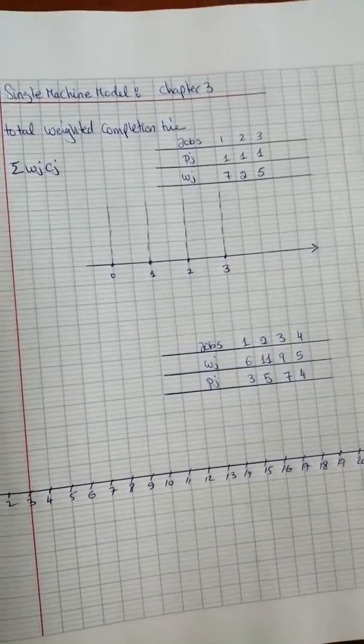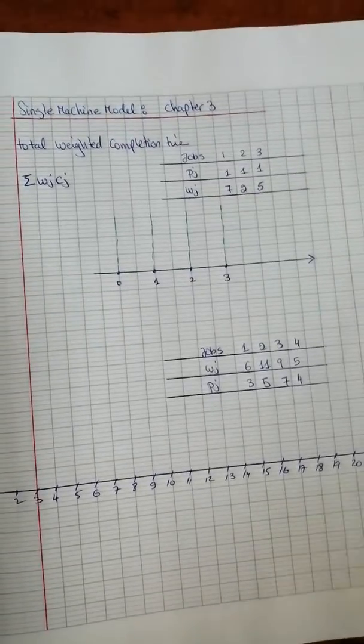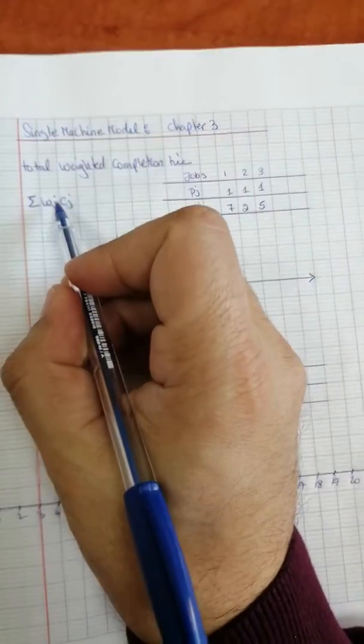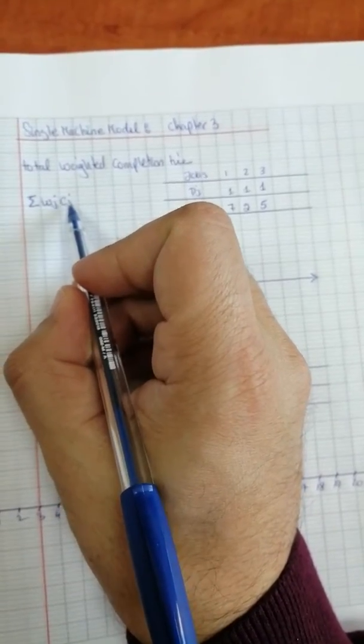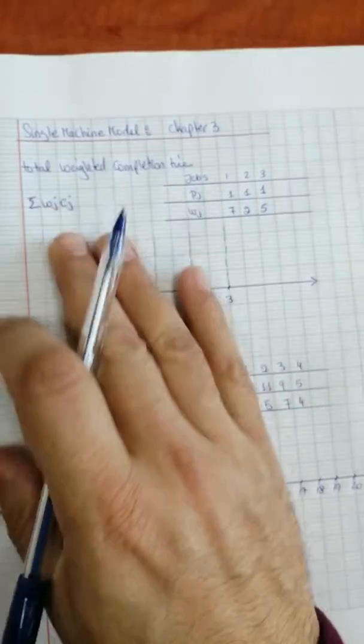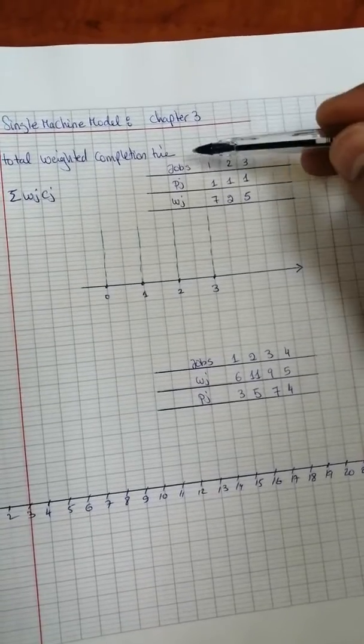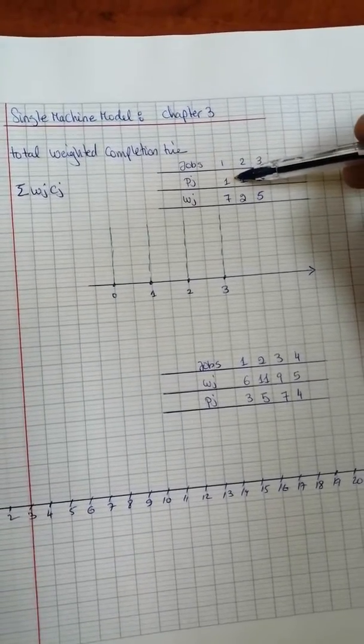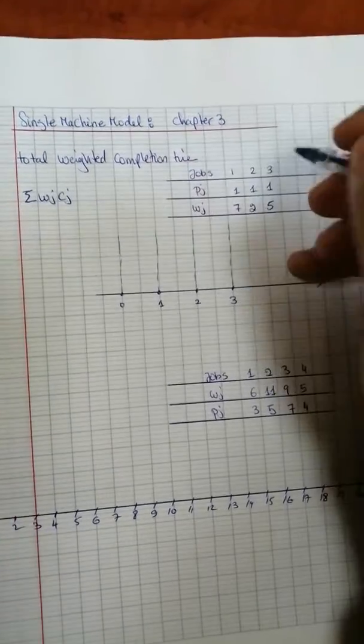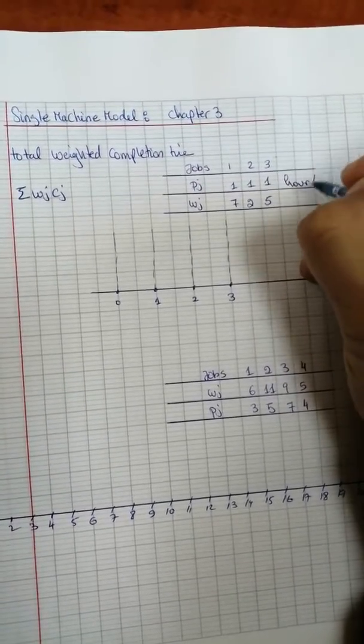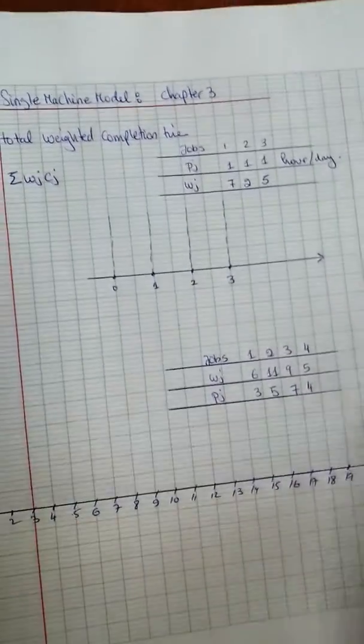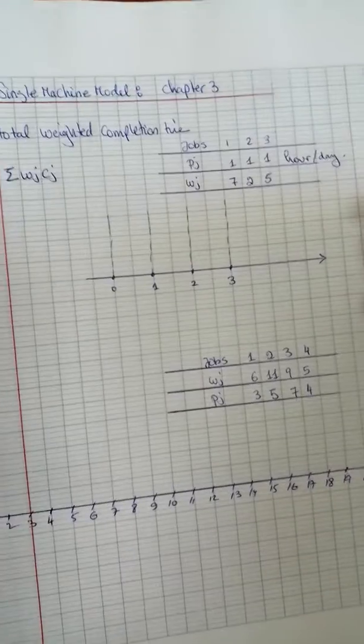In industrial scheduling, to find the total weighted completion time, we use the formula: summation of wj times cj. Consider we have three jobs: job 1, 2, 3. Each has a processing time pj of 1, which is denoted as one hour or one day. In this example, we're going to consider it as one hour.